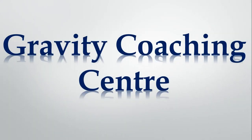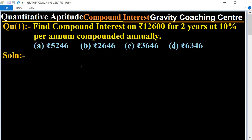Welcome to our channel Gravity Coaching Centre, Quantitative Aptitude, chapter Compound Interest. Question number one: Find compound interest on rupees 12,600 for two years at 10% per annum compounded annually. In this question given...